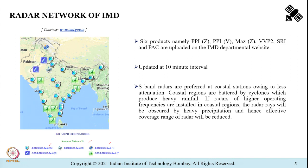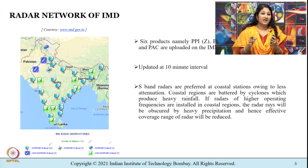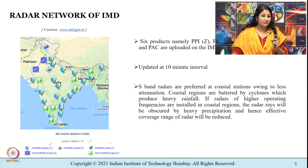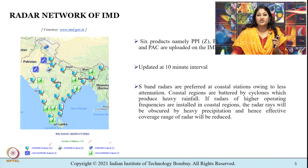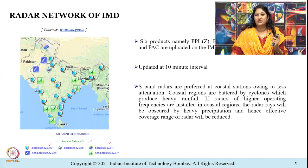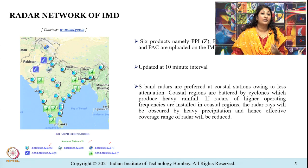At coastal locations, S band radars are preferred because of their low attenuation. Coastal regions are battered by cyclones which produce heavy rainfall, so if radars of higher operating frequencies are installed there, the radar rays will be obscured by heavy precipitation, reducing the effective coverage range. We will be covering these terminologies as part of today's lecture.